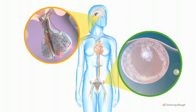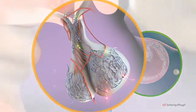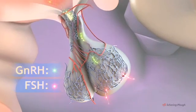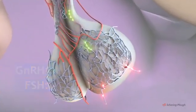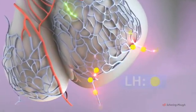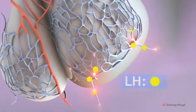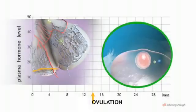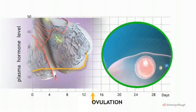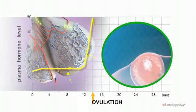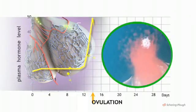As the follicle matures, the hypothalamus increases secretion of GNRH. This, in turn, stimulates the pituitary to secrete a second hormone which acts on the ovary. This is luteinizing hormone, or LH. Toward the middle of the cycle, there is a sudden peak in the blood level of LH. This acts as the trigger for ovulation.